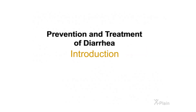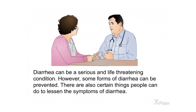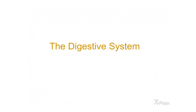Prevention and treatment of diarrhea. Diarrhea means that you have loose, watery stools more than three times in one day. You may also have other symptoms such as cramping or nausea. Diarrhea can be a serious and life-threatening condition; however, some forms of diarrhea can be prevented. This program focuses on the causes, prevention, and treatment of diarrhea, including information about the anatomy of the digestive system and when to see a doctor.